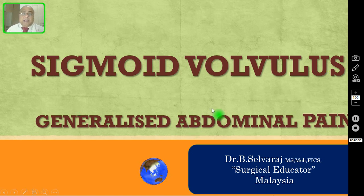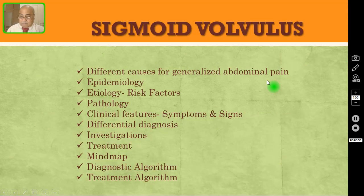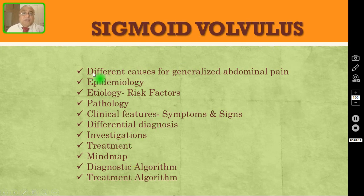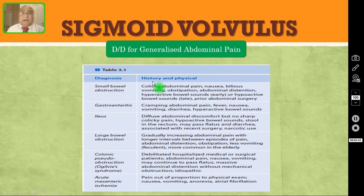So in this episode today, I am going to discuss one more cause for generalized abdominal pain — that is sigmoid volvulus. I am going to discuss it under the following subheadings. After watching this presentation, all of you should be able to know the different causes for generalized abdominal pain, the epidemiology and risk factors, pathology, clinical features, differential diagnosis, investigations, and treatment of sigmoid volvulus. I have also included a mind map, a diagnostic algorithm, and a treatment algorithm.